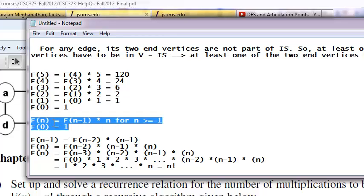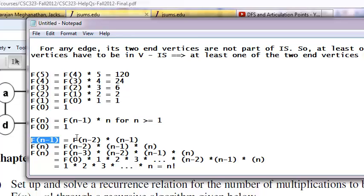So from this, since this holds good for any n greater than or equal to 1, I can write simply f(n-1) is going to be f(n-2) times (n-1).